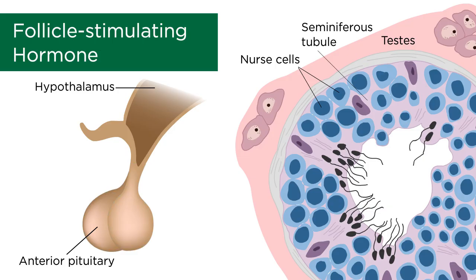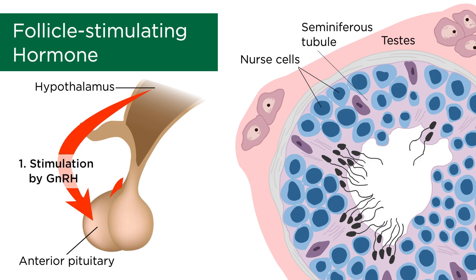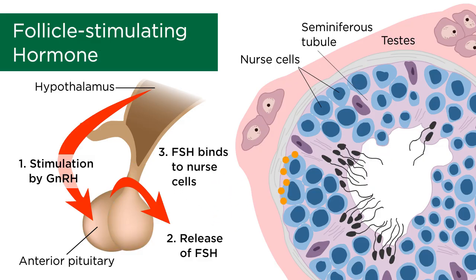Now let us look at follicle stimulating hormone and its effects on male sexual function. Similar to luteinizing hormone, the release of follicle stimulating hormone is also conducted through gonadotropic releasing hormone, coming from the hypothalamus. FSH targets nurse cells within seminiferous tubules. When stimulated by FSH and in the presence of testosterone, nurse cells house the production and early maturation of sperm.